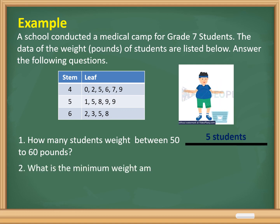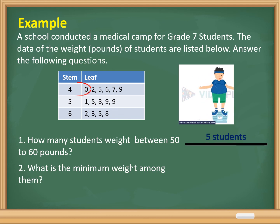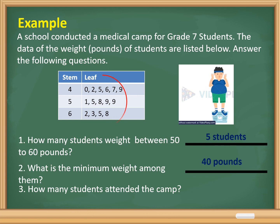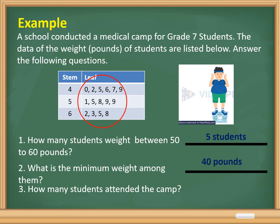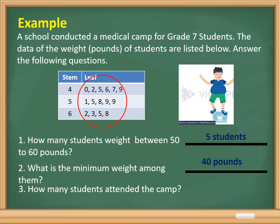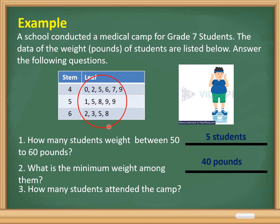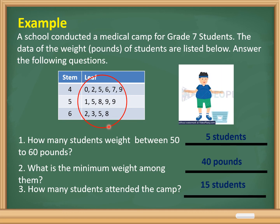Number two: what is the minimum weight among them? The answer is 40 pounds. Number three: how many students attended the camp? The total number of leaf values is also the total number of students in this data set. Counting all the leaf values, we get 1, 2, 3, 4, 5, 6, 7, 8, 9, 10, 11, 12, 13, 14, 15. So the answer for number three is 15 students.